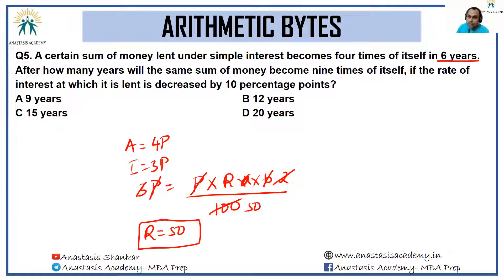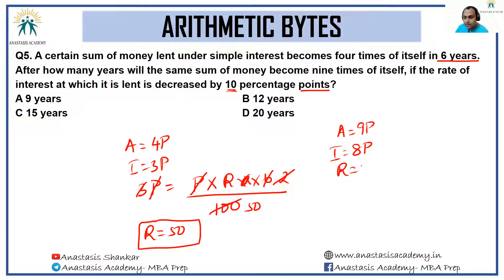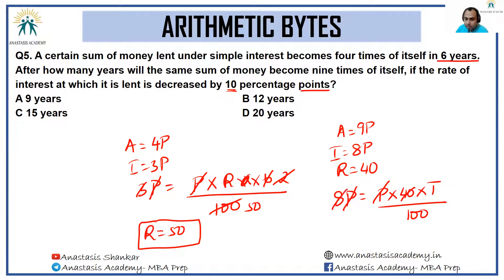After how many years will the same sum of money become nine times of itself if the rate of interest decreased by 10 percentage points? We want the amount to equal 9P, so interest has to equal 8P. Previously the rate was 50%, so 10 percentage points lower means the new rate of interest is 40%. So 8P = P × 40 × t / 100. P cancels, leaving t = 20. So for 20 years we need to run it. The answer is option D.